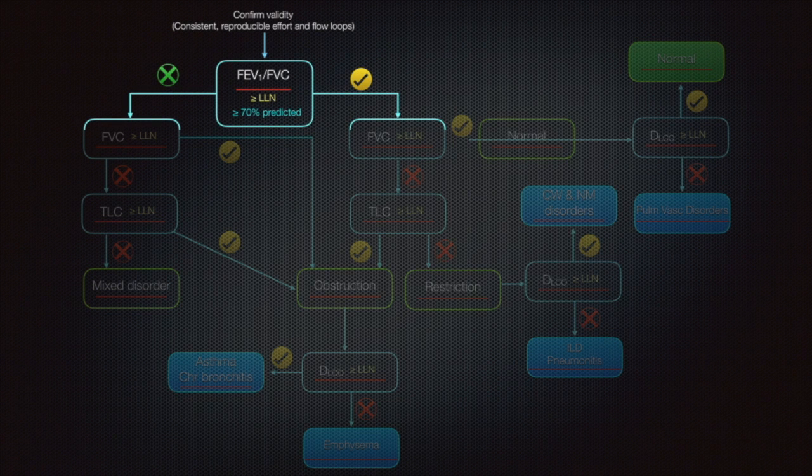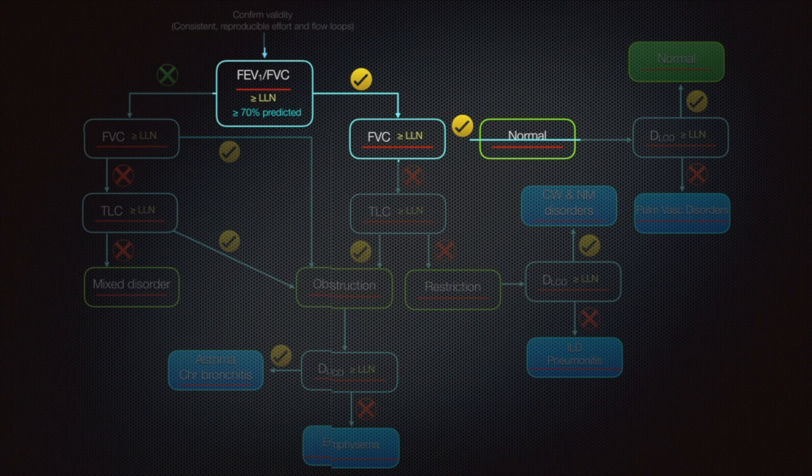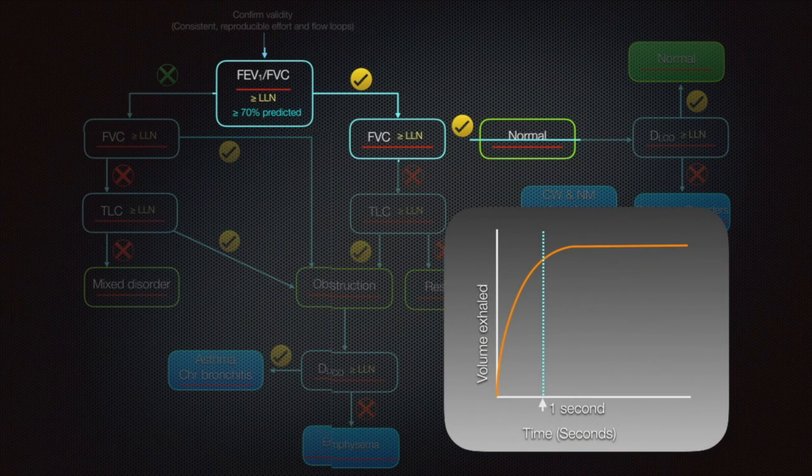After confirming the validity of reported values, looking at the spirometry curves and correlating with clinical history, we check the FEV1 by FVC ratio. The question is whether it is above the lower limit of normal as per American Thoracic Society guidelines, or above 70 percent predicted as per GOLD guidelines. If the ratio is normal, check forced vital capacity FVC. If it is okay, we may be dealing with a normal PFT. You can correlate the steps so far with the tracing shown before, normal FEV1 and FVC.